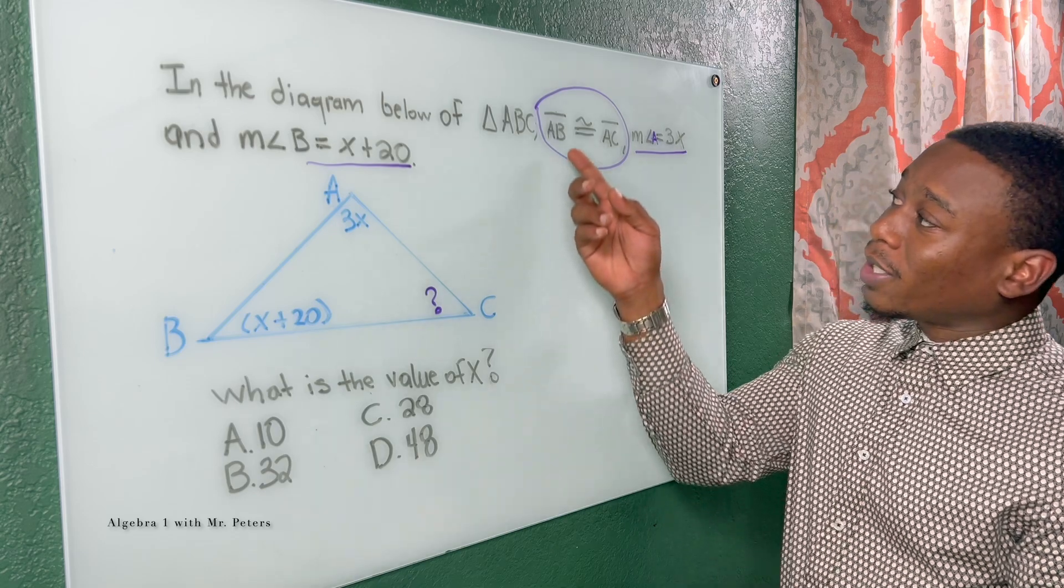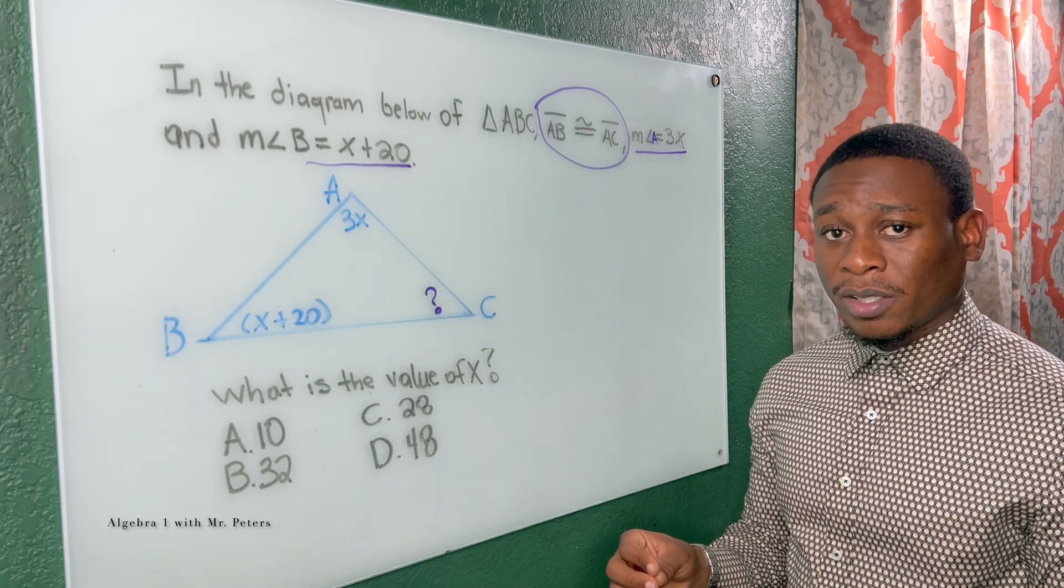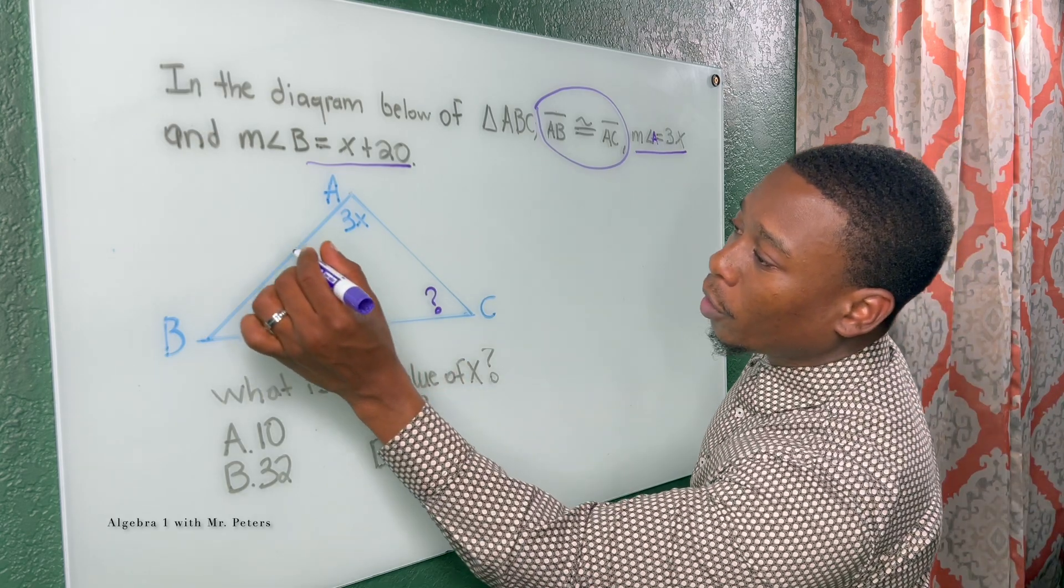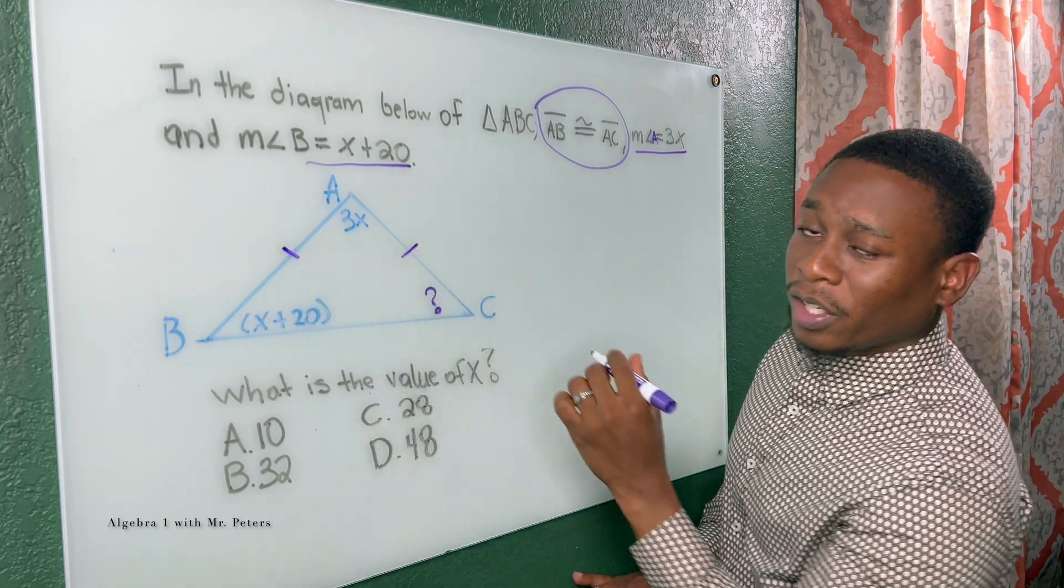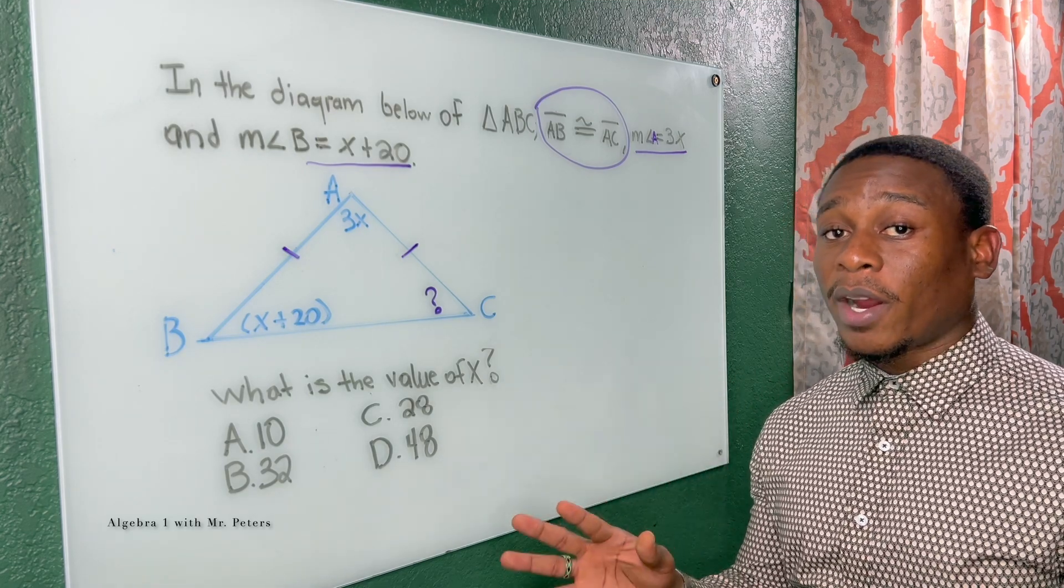So it says line AB and line AC are congruent. And what we understand about this is that two sides of this triangle are the same, meaning it's an isosceles triangle.